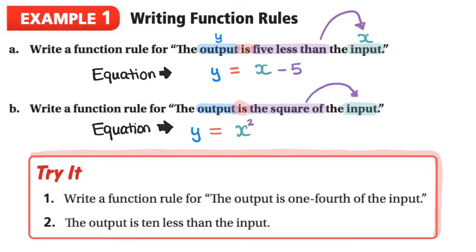So here are your first two try it questions for this video. We want to write the rule or as an equation for both of these. So write a function rule for the output is 1 fourth of the input and we're also doing the same thing. Write a function rule for the output is 10 less than the input.